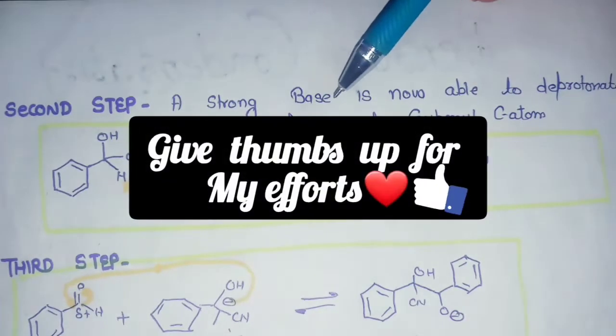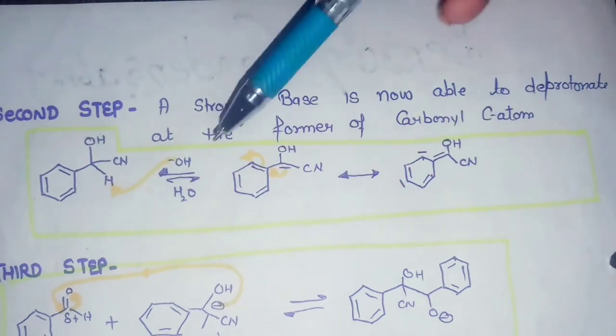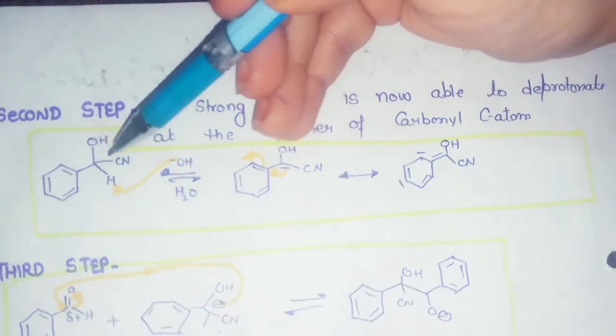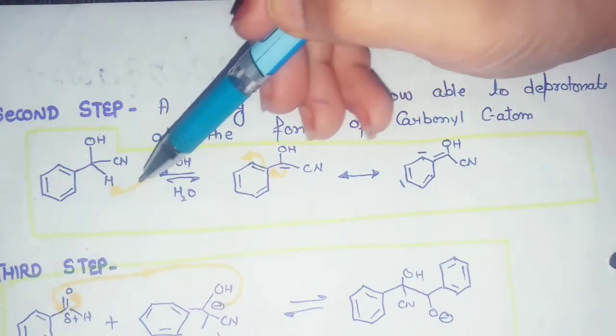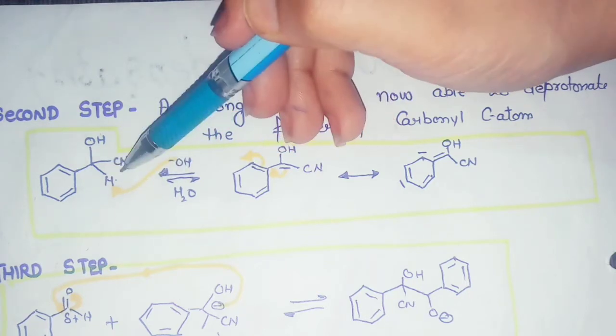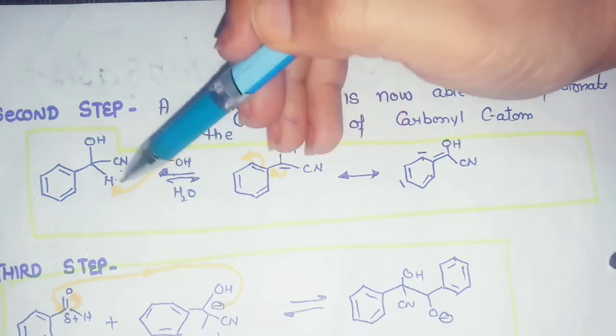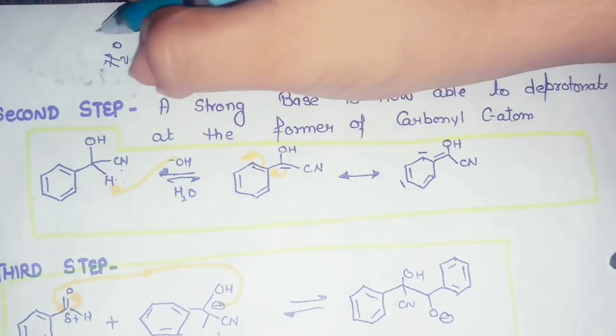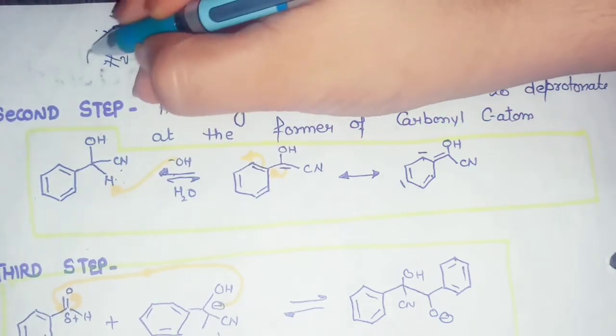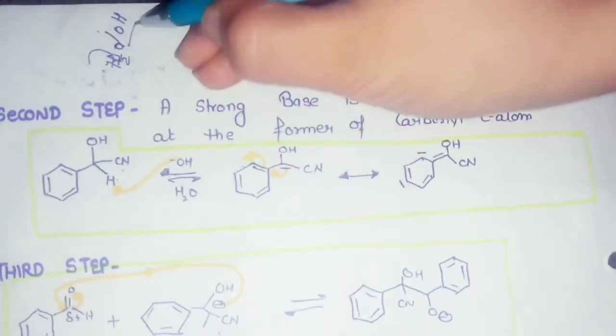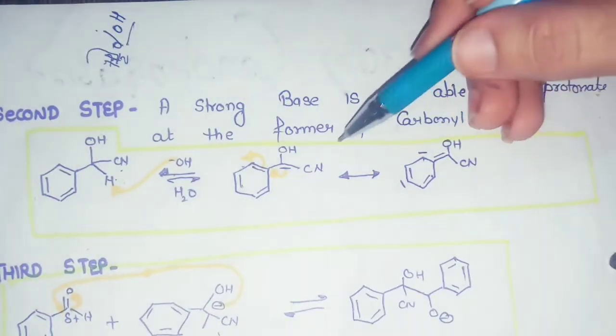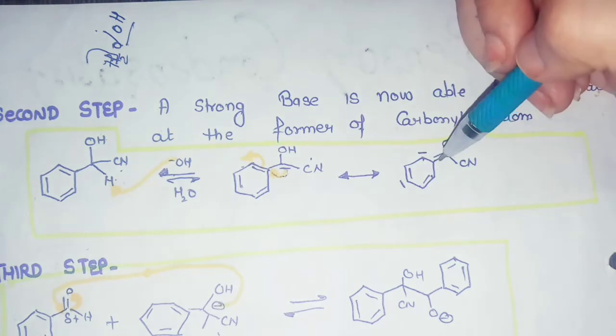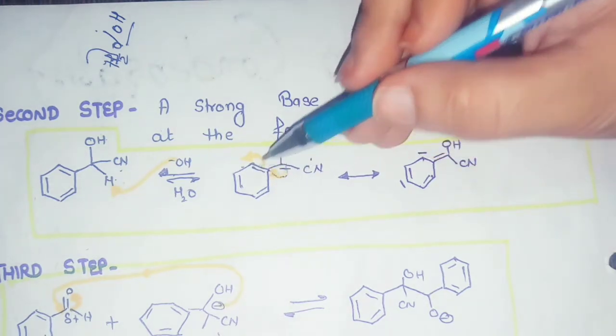In the third step, we apply a strong base because it was deprotonated and the carbanionic atom can attack. I have shown the compound with the hydroxyl group. When we add hydroxyl group, water is removed from the compound and our product has OH, with the bond moving to the bottom.